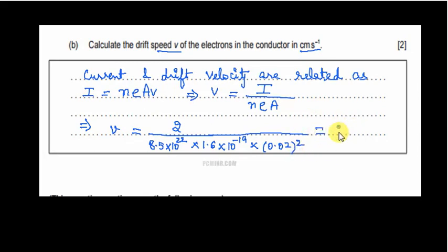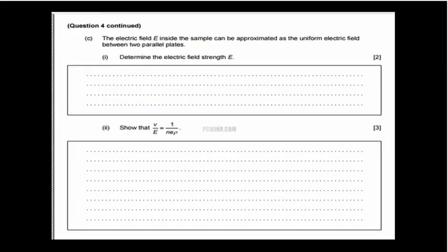Coming to the question number C part, the electric field inside the sample can be approximated as a uniform electric field between two parallel plates. So determine the electric field strength E. In order to determine the electric field strength, we first find out by Ohm's law the potential difference.